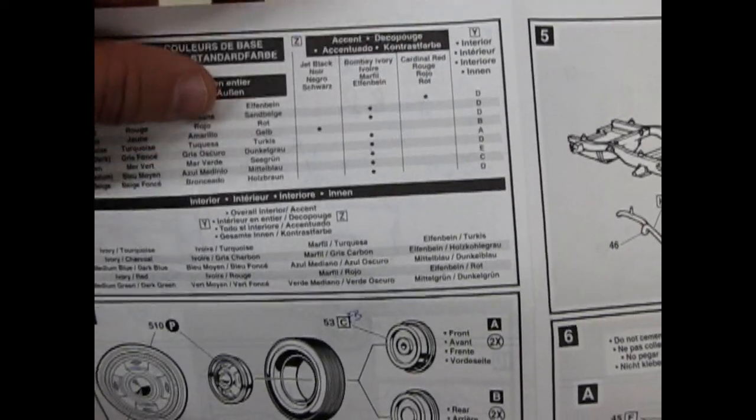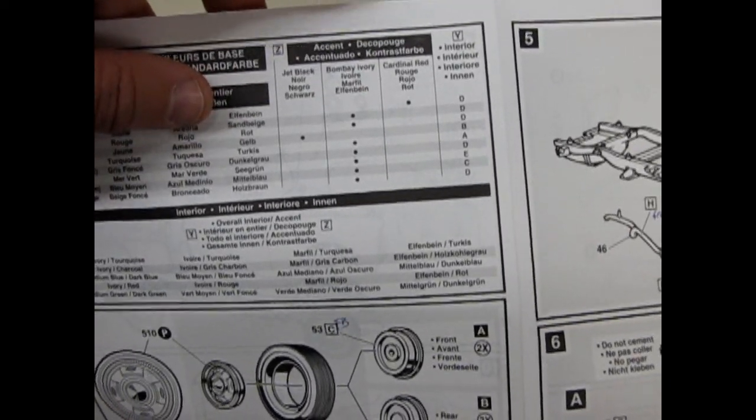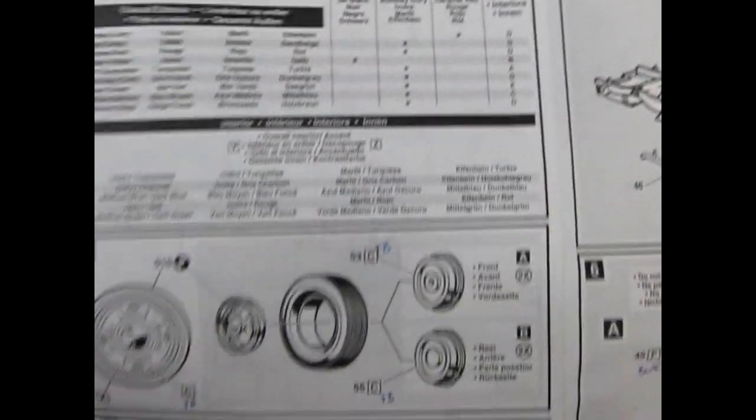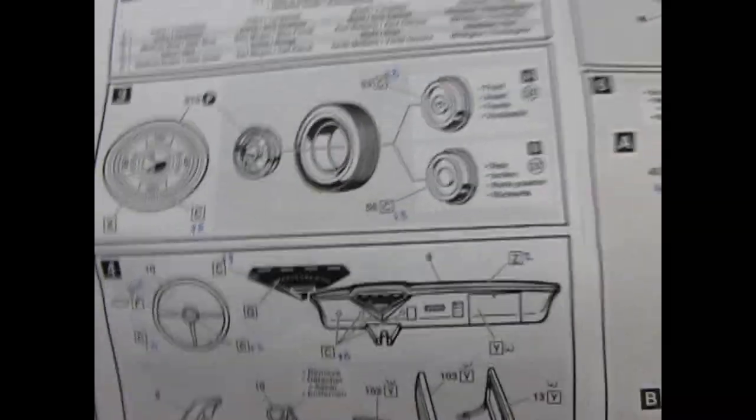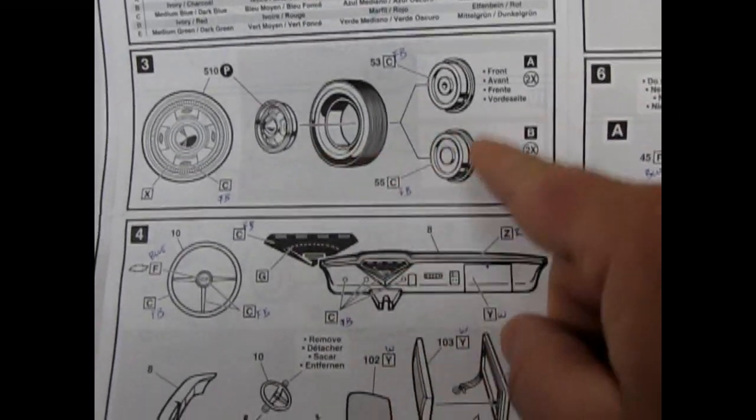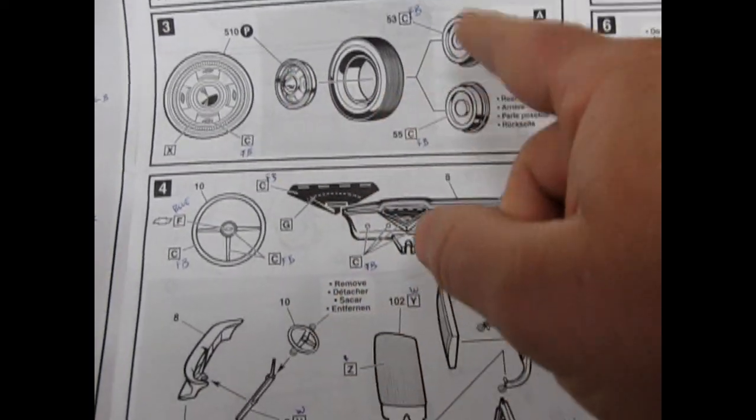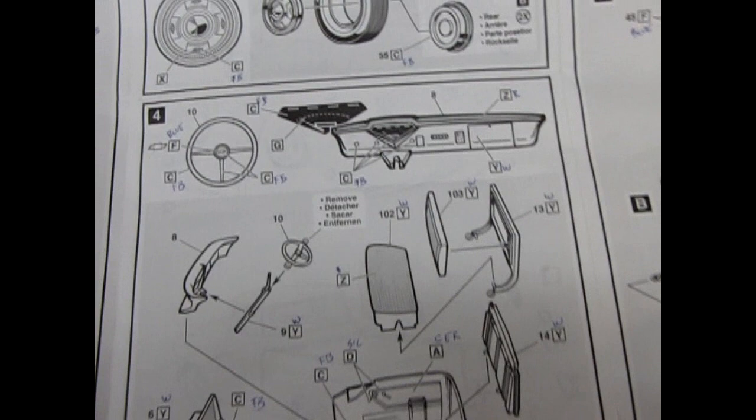Here they give you a chart for figuring out your truck body color as well as the accents: Jet Black, Bombay Ivory, and Cardinal Red, and your interiors. Then there is a two-piece type wheel going together. Wheel tire and wheel backs, so three pieces really.